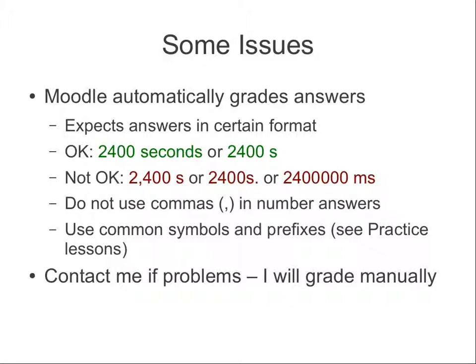Some issues people encountered with the online quizzes. The software is called Moodle. When I set up the quiz questions, I provide expected answers and Moodle automatically grades your answers — I don't. Moodle gives you a score immediately and expects answers in certain formats, because I've only programmed in some formats. In this example question, if you gave '2,400 seconds' spelled out, or just 's' lowercase, it would have been marked 100% correct. However, if you used a comma — like '2,400' with a comma — the software doesn't recognise commas in numbers, so it would have been marked wrong.